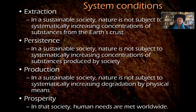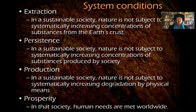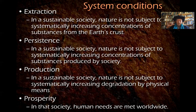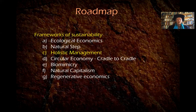How do you do that? Natural Step says you take what they called the system conditions of a sustainable society: nature is not subjected systematically to increasing concentrations of substances mined from the Earth's crust; nature is not subject to systematically increasing concentrations of substances produced by society, like plastic; nature is not subject to systematically increasing degradation by physical means — the biological capacity of the planet is retained; and human needs are met worldwide. These system conditions are the basis that a company would use to plot its course through the funnel, finding that sweet spot that enables it to endure.